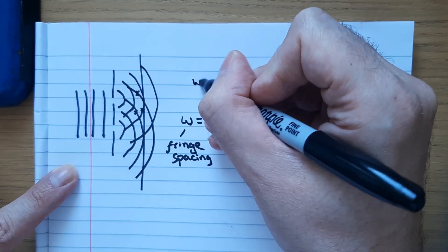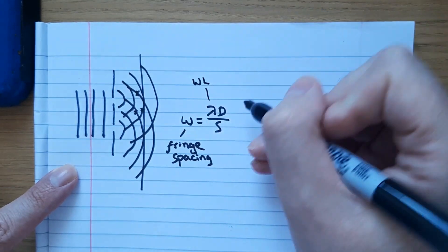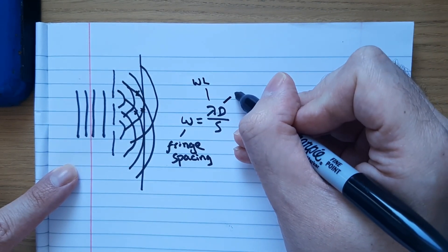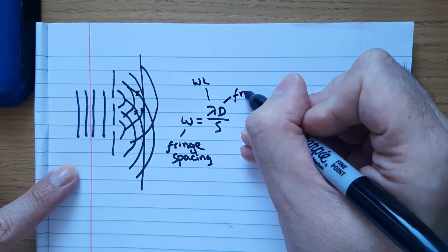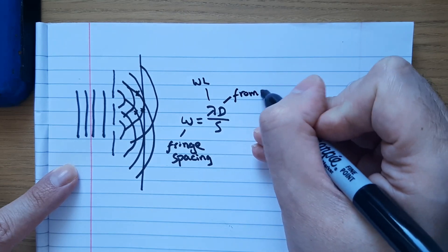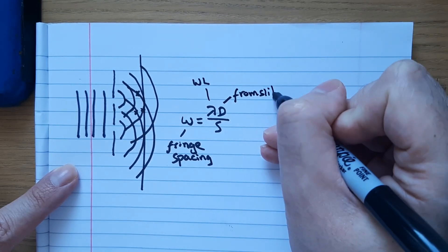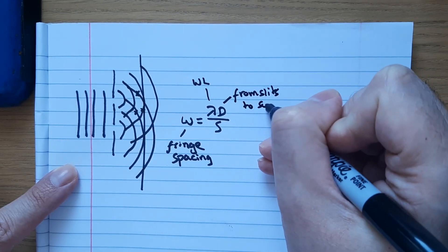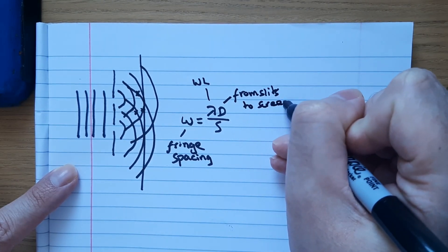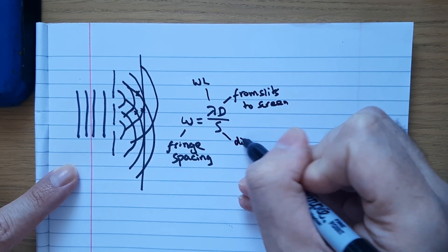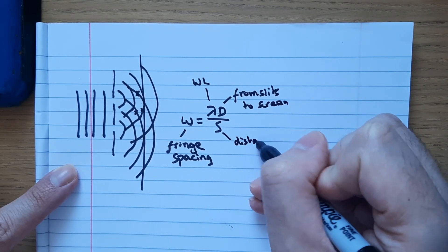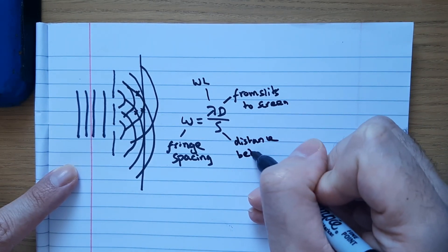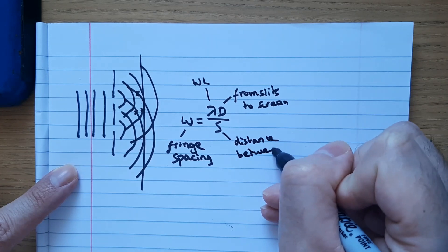Lambda is the wavelength, d is the distance from the slits to the screen, and s is the distance between the slits.